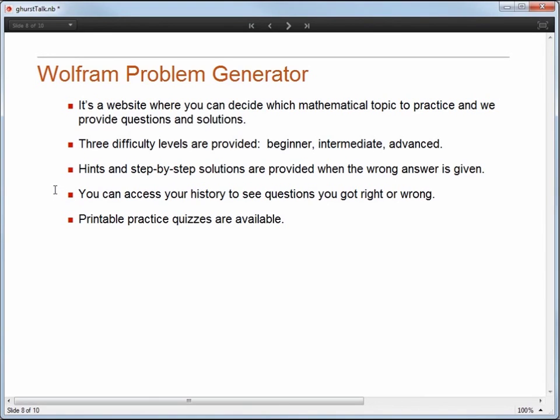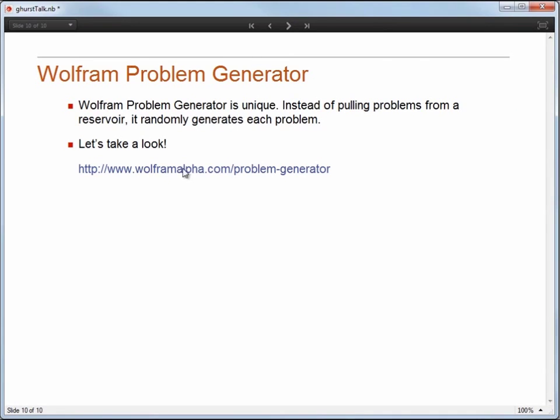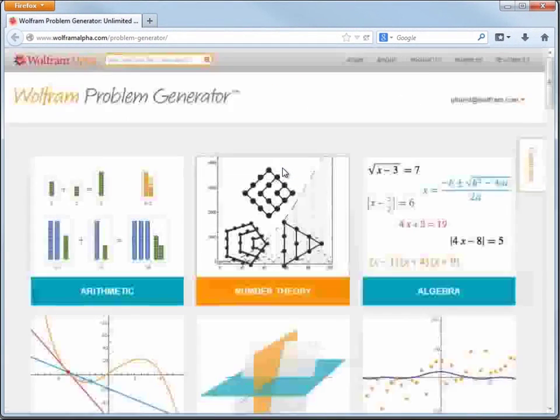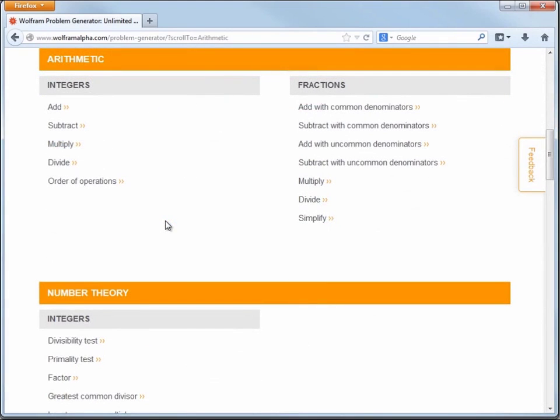Additionally, you can access your history to see the questions you've gotten right or wrong. And we also can provide printable practice quizzes with answer keys. One more cool thing is that the Wolfram Problem Generator is unique because we don't just pull questions from a reservoir we've created. We actually randomly generate the problems on the fly. This way you're guaranteed to get problems that you've never seen before. So let's check it out. If we go to wolframalpha.com/problem generator, we're taken to the main page. As you can see here, we have six topics to choose from currently. We have arithmetic, number theory, algebra, calculus, linear algebra, and statistics. Now, each subtopic covers the common core standards very closely.